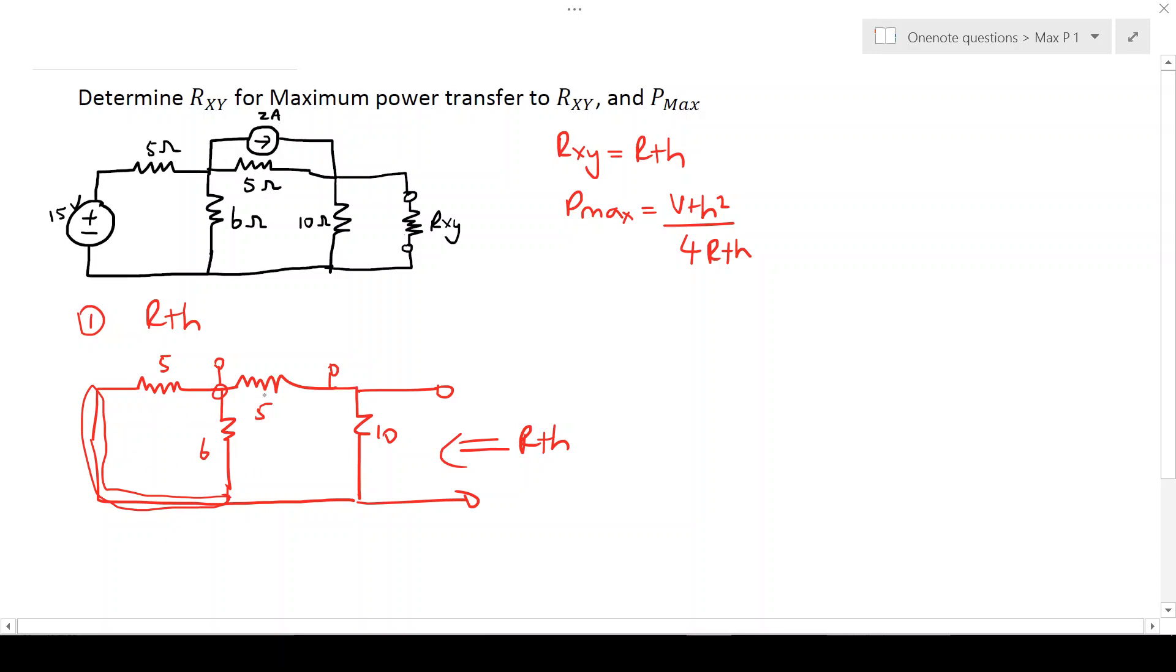The result of that is in series with the 5 and then in parallel with the 10. Such that Rth is going to give you 6 in parallel with 5 plus 5 and that will be in parallel with 10.